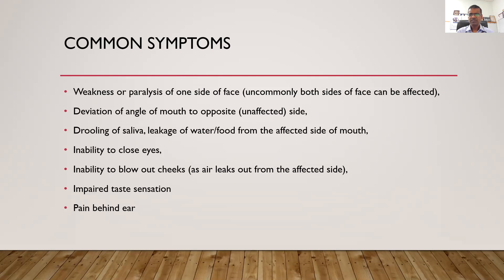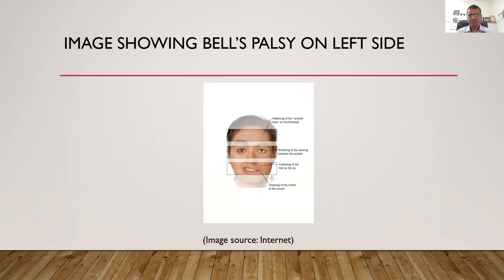When they try to blow out their cheeks, air can leak out from the affected side. In some cases, taste sensation on the front of the tongue, which is supplied by the facial nerve, can be affected. Many people start with pain — typically behind the ear on the affected side — and this pain persists even after the paralysis happens. Also, the forehead furrows will not be obvious on the affected side when the patient tries to look up.